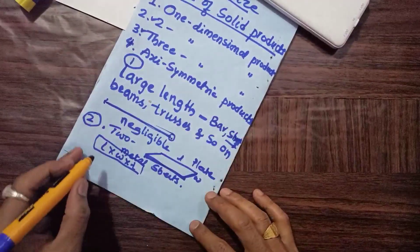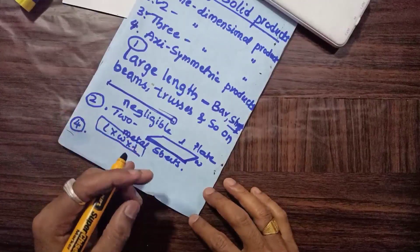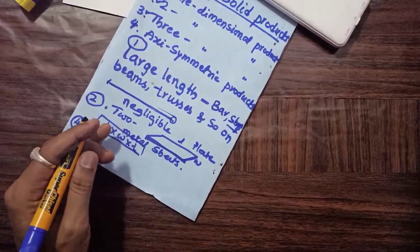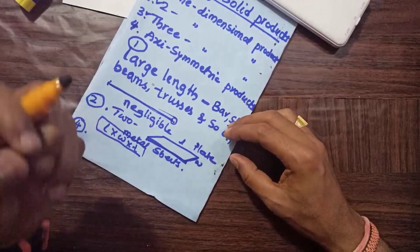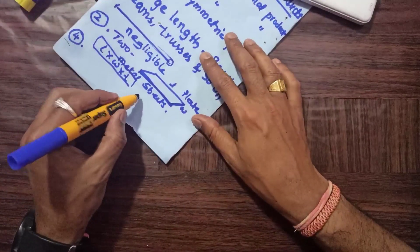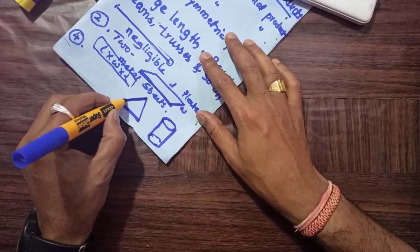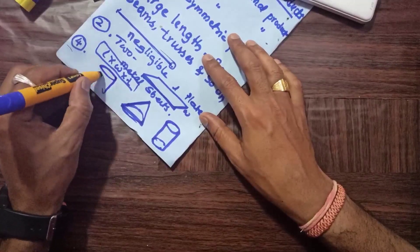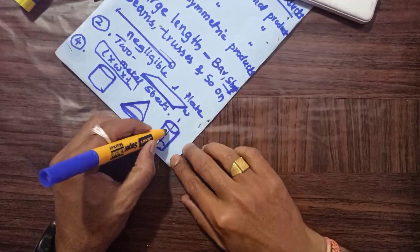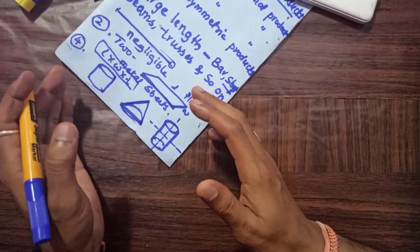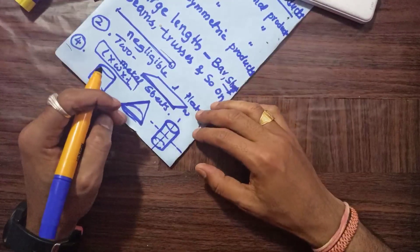The fourth type is axisymmetric products. In some solids, most of the mass of the solid is symmetric with respect to one axis or two axes — such solids are called axisymmetric products. Examples include a cylinder, cone, or prism — products that are symmetric about the x-axis or y-axis.